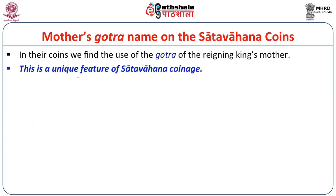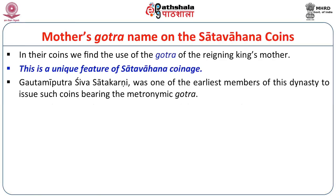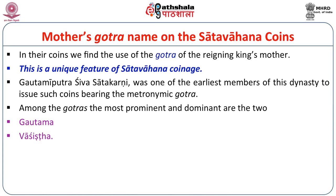On Satavahana coins we find the use of gotra names — specifically metronymic gotras, which is a very typical character of this region of Deccan. The Satavahana rulers used the gotras of their mothers: Gautamiputra means he belonged to the Gautamagotra, and Vashishtiputra means he belonged to the Vashishtagotra. This is a unique feature of Satavahana coinage. Gautamiputra Shiva Satakarni, a predecessor of Gautamiputra Satakarni, was one of the earliest members of the dynasty to issue coins bearing the metronymic gotra. The two most prominent gotras used are the Gautamagotra and the Vashishtagotra.